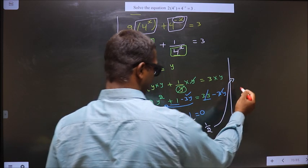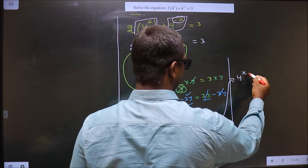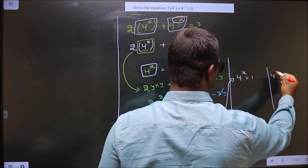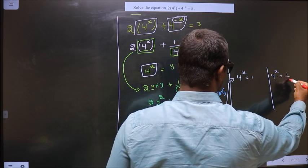Now you replace y, that is 4^x. So we get 4^x equals 1 and 4^x equals 1/2.